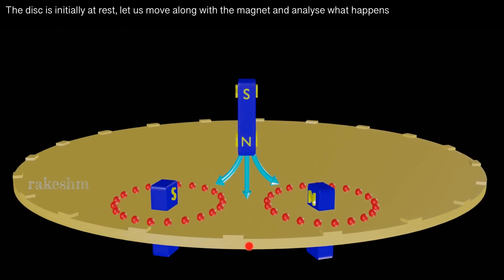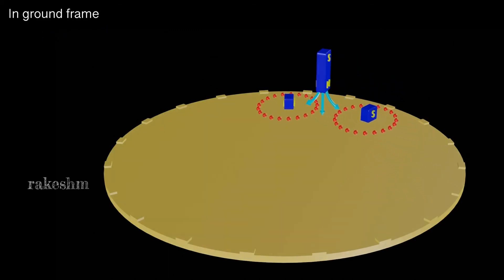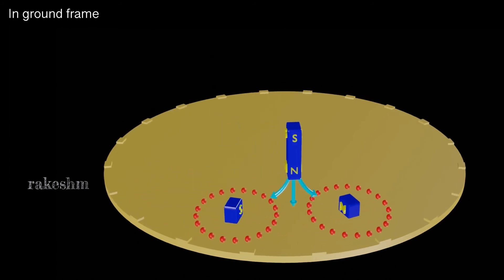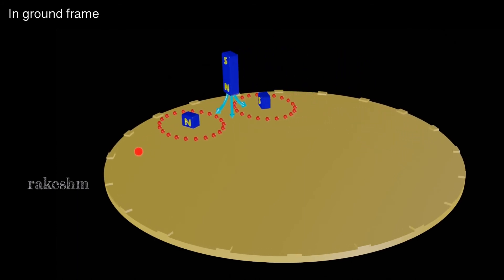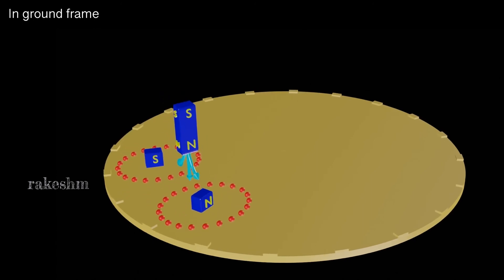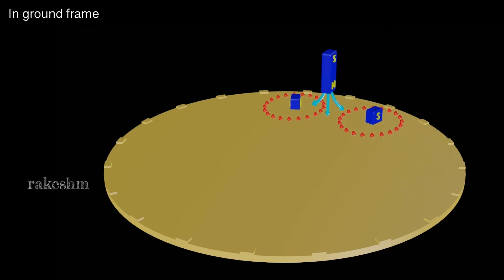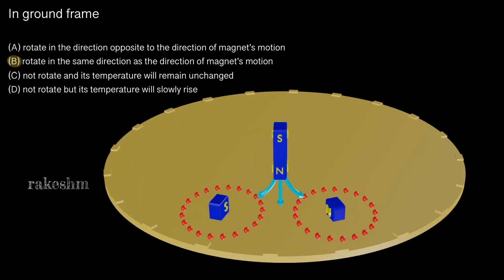We have looked at this in the frame of the magnet, which may cause some confusion. Let us now look at the schematic from the ground frame of reference. You can observe here that the disc is rotating in the same direction as that of the magnet. Also notice that the disc is not going at the same speed as the magnet — it is going much slower than the magnet.